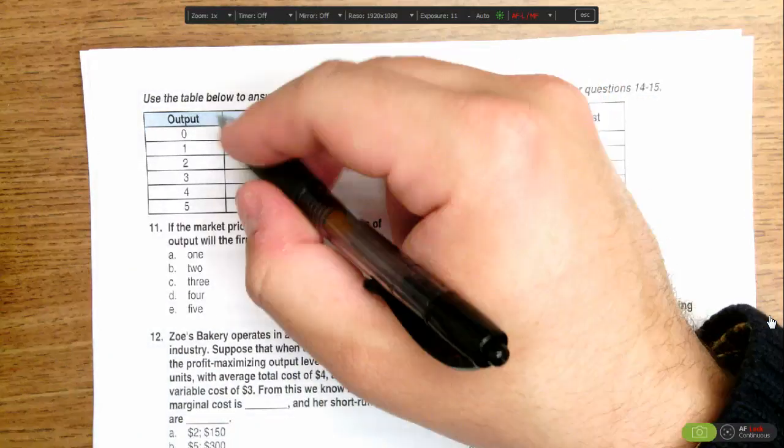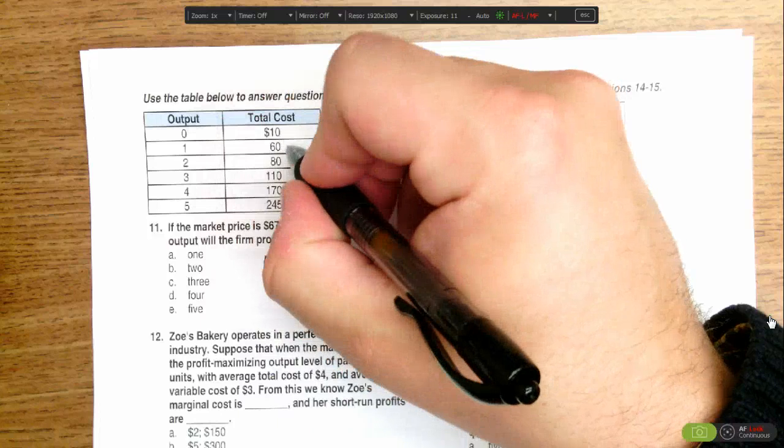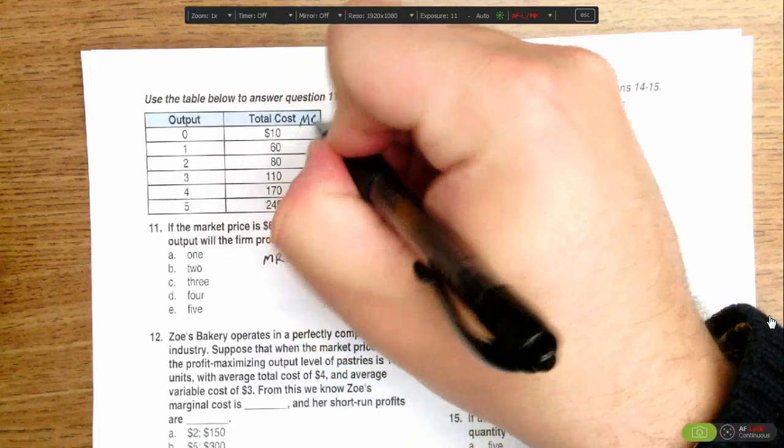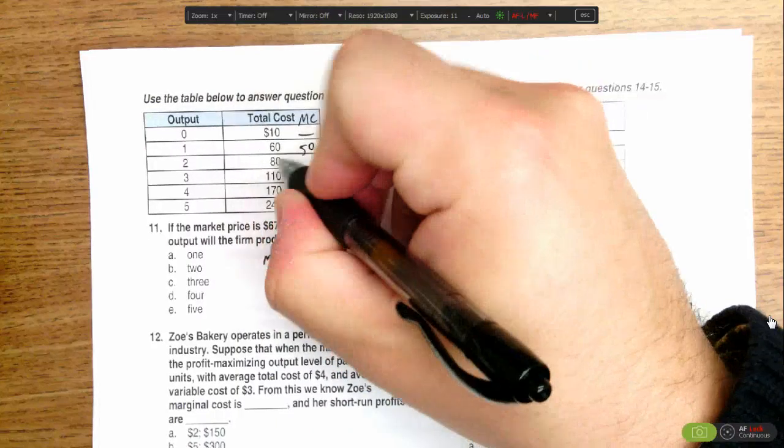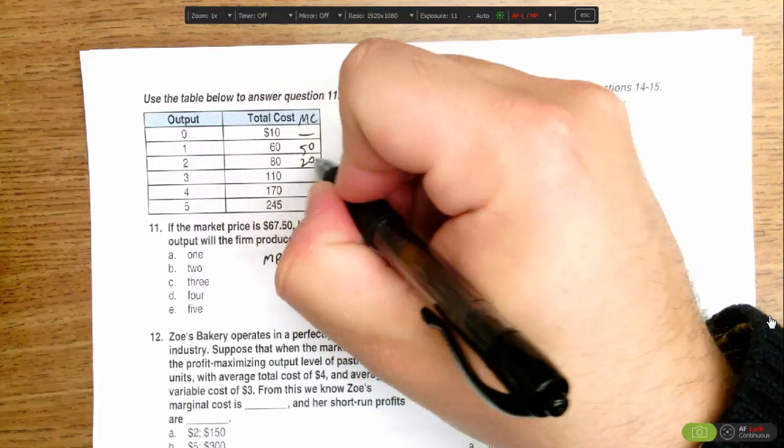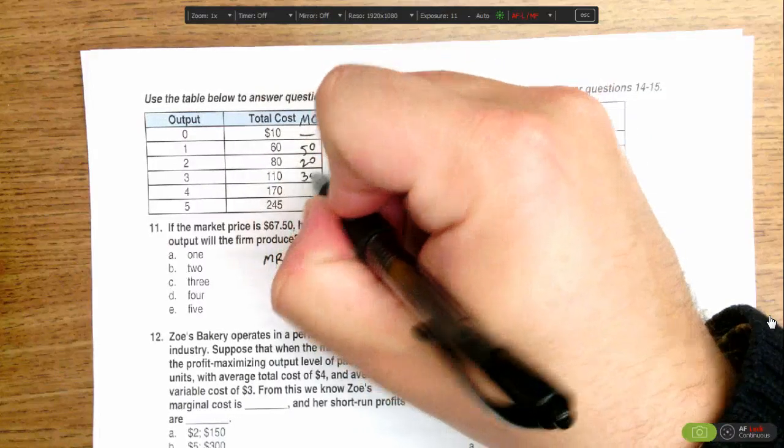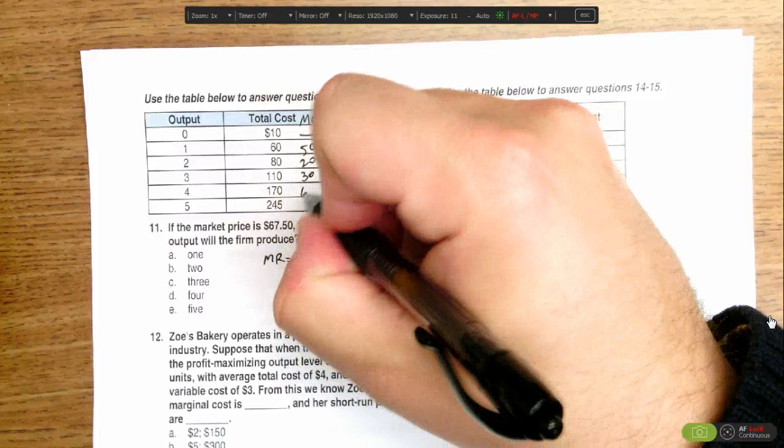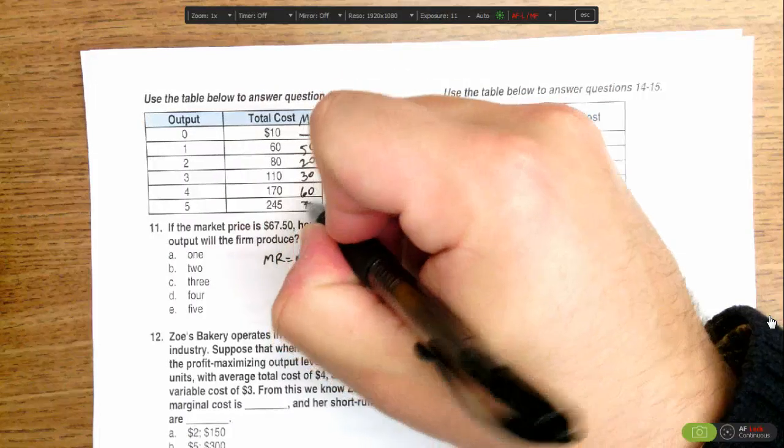So when we go from zero to one, I go from $10 in costs to $60, so the marginal cost is $50. Marginal cost of two, total cost increased by $20, so it's $20 for two, $30 for three, $60 for four, $75 for five.